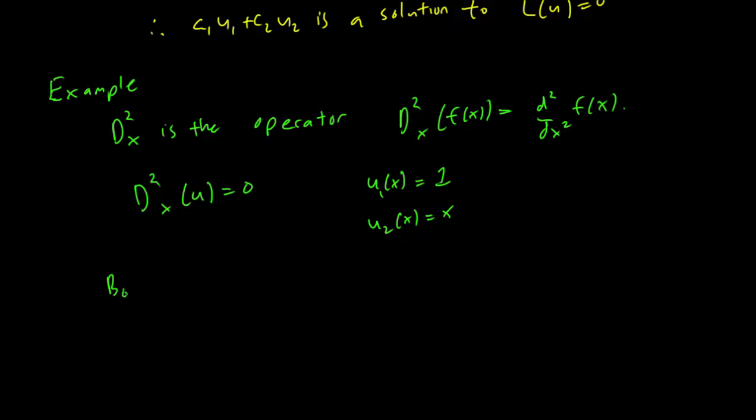So we have both D²ₓ(u₁) = 0 and D²ₓ(u₂) = 0.